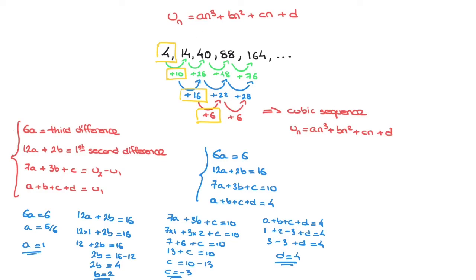Now that we have all four coefficients a, b, c, and d, we can state this sequence's formula. Indeed, un equals n cubed plus 2n squared minus 3n plus 4. That is this cubic sequence's formula for the nth term.